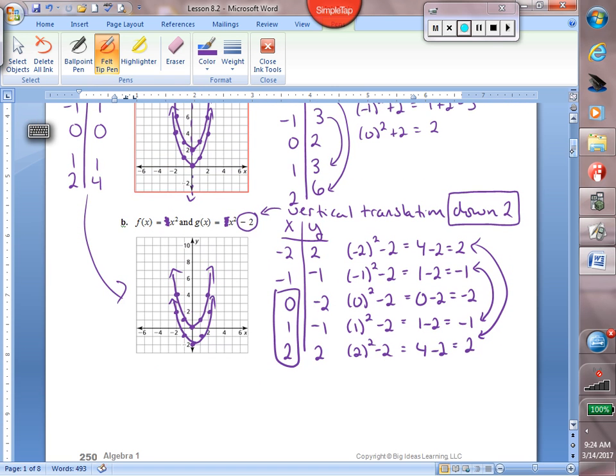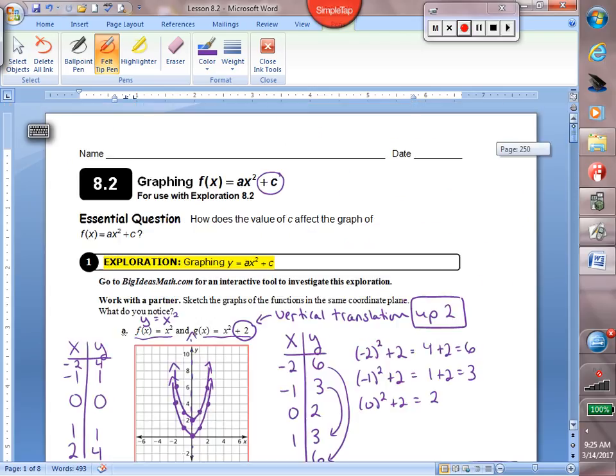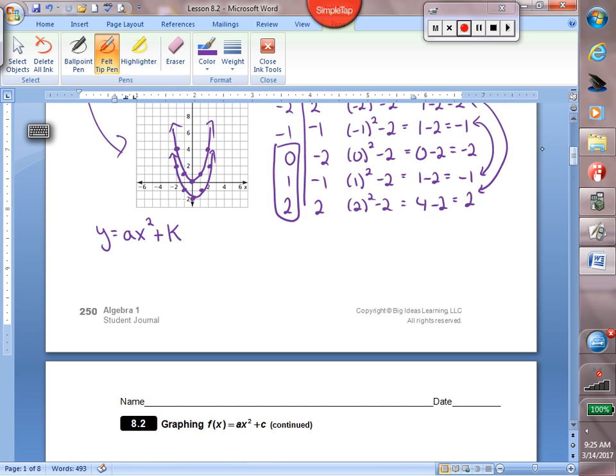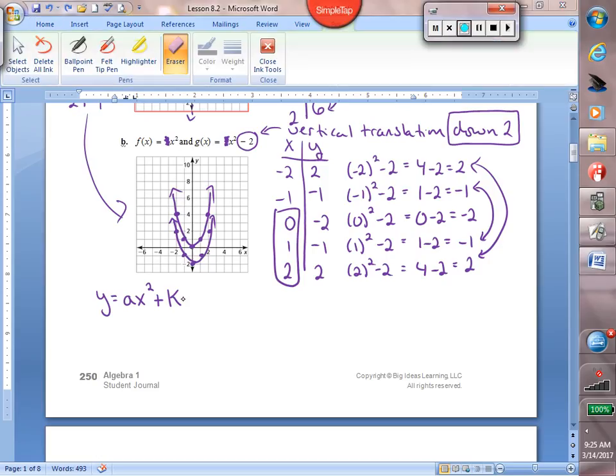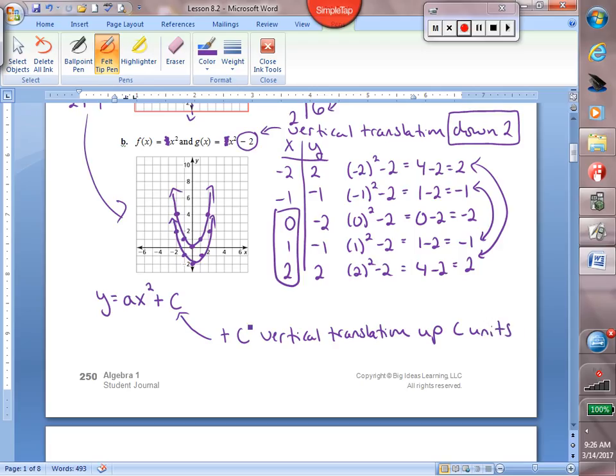So let's just take a second at the bottom of the page and summarize. This is the form that we started with back at the top. And your book calls this C. Let me make that fix real quick. So when we add a number onto our squared term, it caused a vertical translation up, and we just put C units. So whatever number C happens to be, that's how many we would move up.